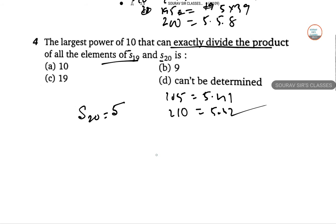And hence the number of zeros at the end of the product is also 5. So the number of zeros at the end of the product of S19 and S20 will be 10 zeros. The largest power of 10 is 10, which can exactly divide the product of S19 and S20. So answer is 10.